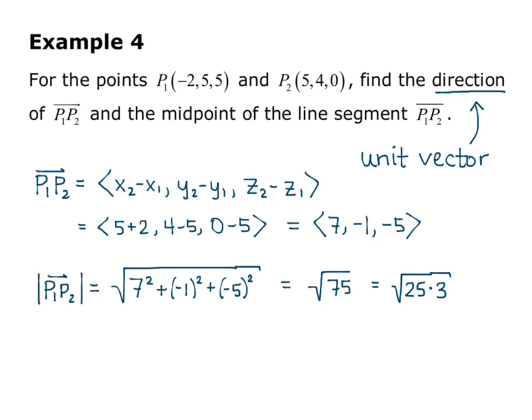Now I know there's a perfect square factor, so I factor 75 as 25 times 3, and then I can actually take the square root of the 25, so I get 5 square root of 3. So that's the length of vector P1 P2.